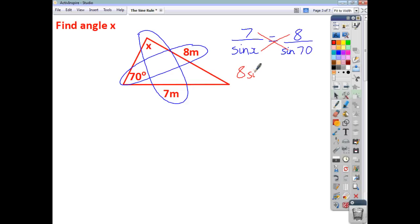We can then use cross multiplication to get everything onto one level. So, we end up with 8 times sine x is equal to 7 sine 70. Dividing both sides by 8, we then end up with sine x being 7 sine 70 over 8. You do inverse sine to get x. So, we do inverse sine of all of this. So, 7 sine 70 over 8.